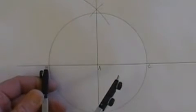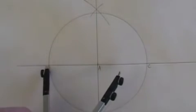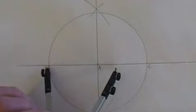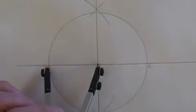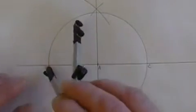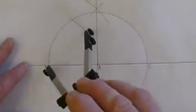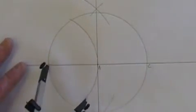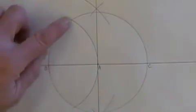Next, set the point of your compass at point B and set the distance to point A, and draw an arc that intersects the outside of the circle at two points.